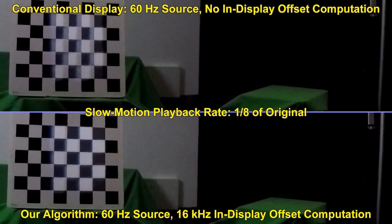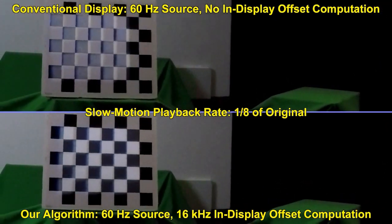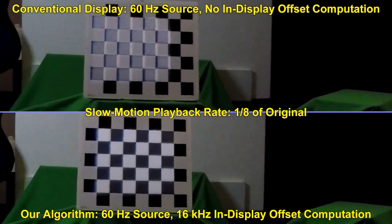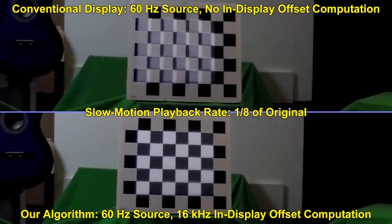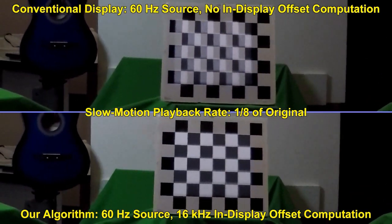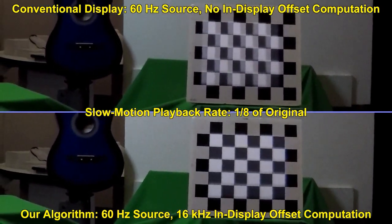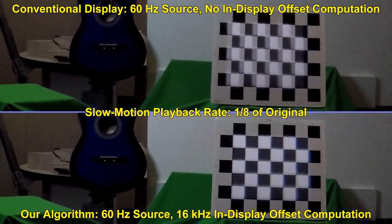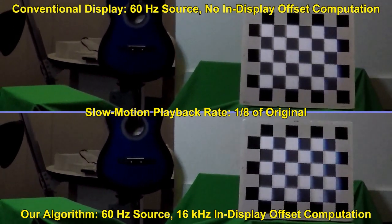Here are both at the same time played back at 1/8th speed. Note the difference in divergence while the HMD is slewing and the similarity in convergence while the HMD is idle. Note also that in the conventional display the overlay appears to jump in position, whereas in our display the overlay moves smoothly.